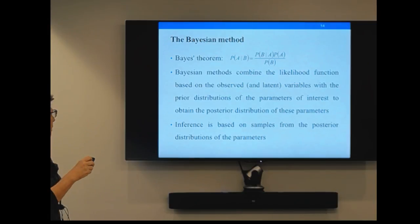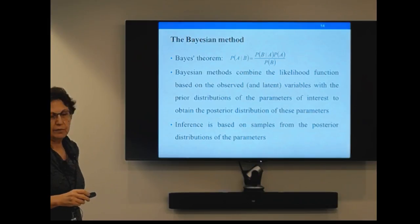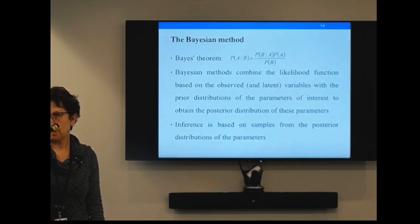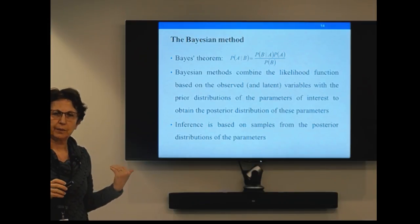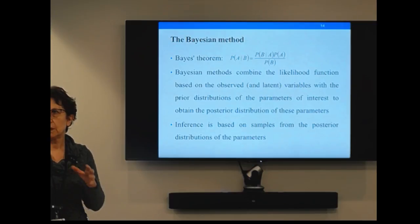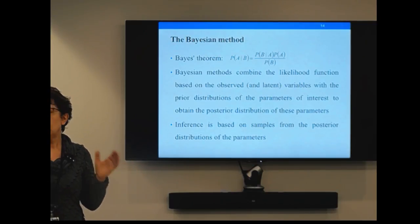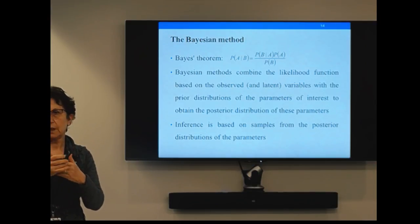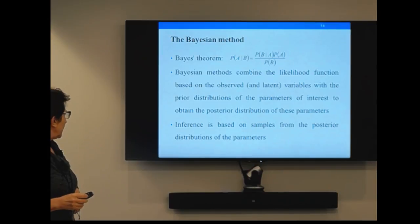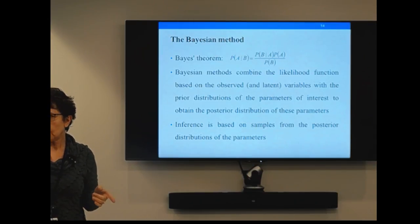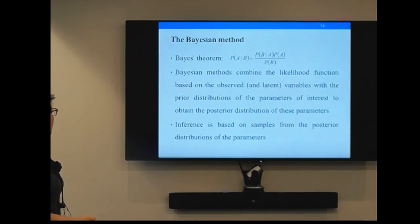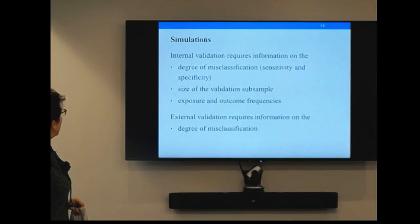The Bayesian method considers parameters as random variables with distributions. It combines prior information on the parameter — here our odds ratio beta — with the data via the likelihood. You multiply them and get your posterior. Based on the posterior distribution you do inference. Usually we can't get the posterior in closed form, but we sample from it — getting large samples and then estimating parameters from there.